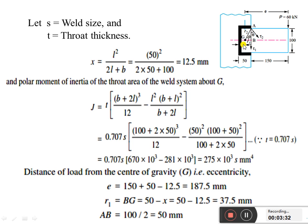If you substitute all the values, we will get 187.5 mm. The eccentricity value equals 187.5 mm. R1 which is equal to GB, which is equal to 50 minus x, equals 37.5 mm. AB value equals 100 divided by 2, which is equal to 50 mm.